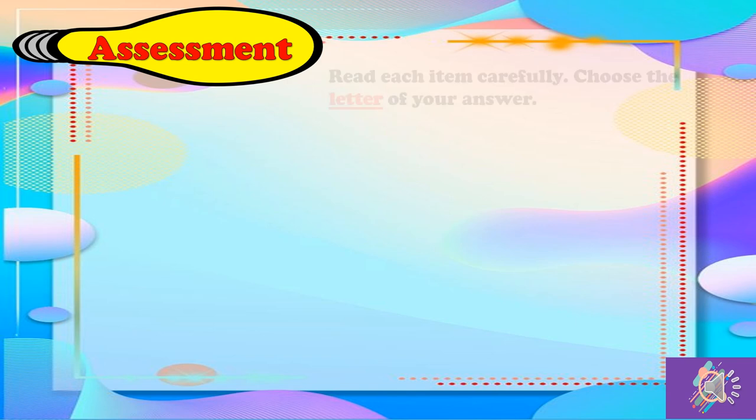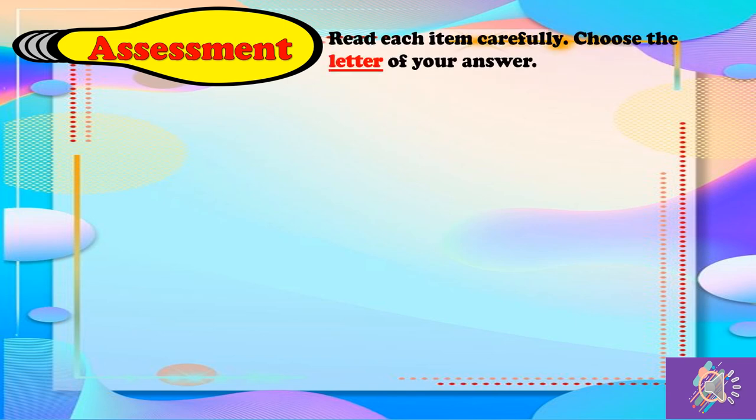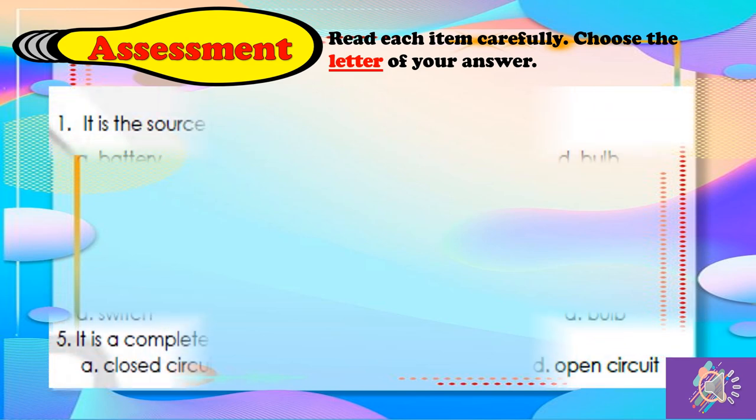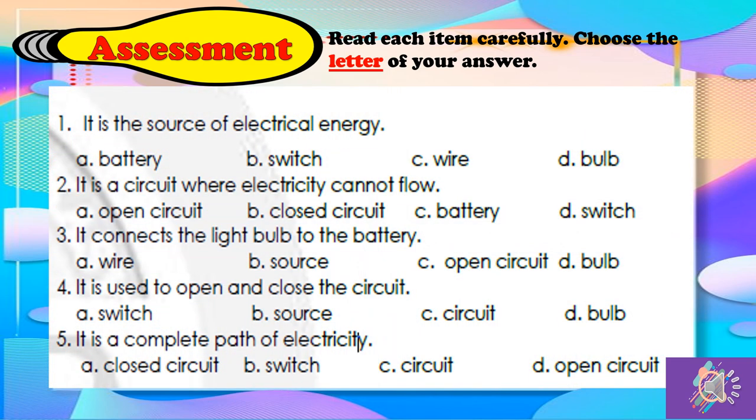Next, please read each item carefully. Choose the letter of your answer. For number 1, it is the source of electrical energy. A. Battery, B. Switch, C. Wire, or D. Bulb. Number 2, it is a circuit which where electricity cannot flow. A. Open circuit, B. Closed circuit, C. Battery, D. Switch. Number 3, it connects the light bulb to the battery. A. Wire, B. Source, C. Open circuit, or D. Bulb.